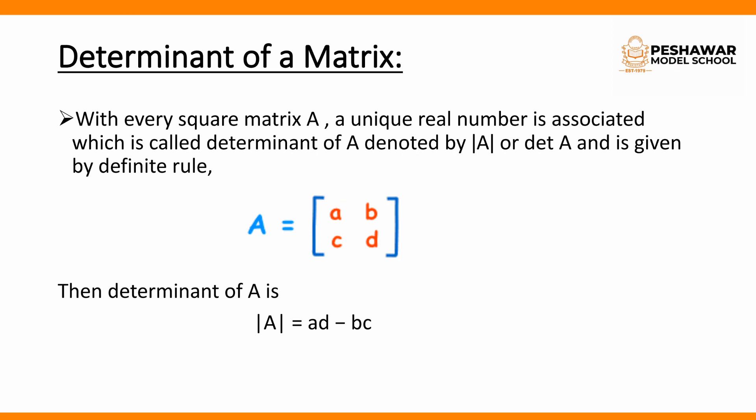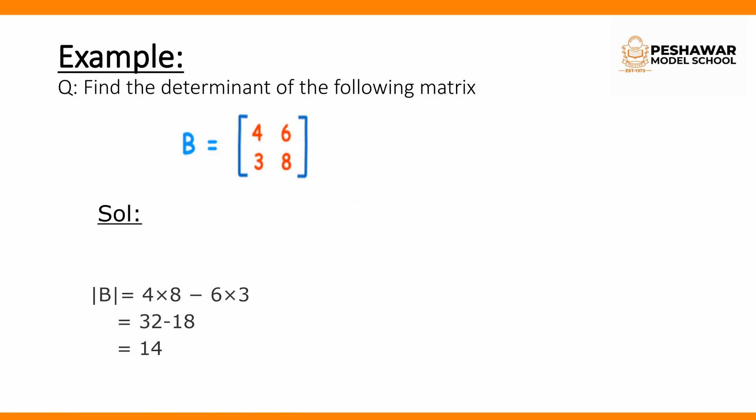The determinant of a matrix is always taken of a square matrix. It is a unique real number that represents the whole matrix. It is denoted in different ways — we can write it as mod of matrix A, or as det(A). It is given by a definite rule: we multiply the diagonal elements with a negative sign in between them. This way we can find the determinant of a matrix.